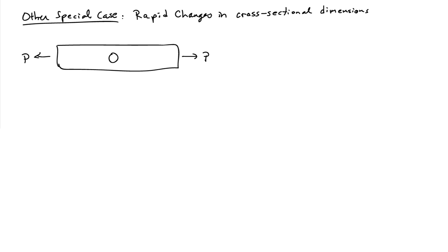There's some other special cases that one should worry about, and one that's important to remember about is rapid changes in cross-sectional dimensions. So if I have a bar with a hole drilled through the middle of it, I have to worry about the state of stress. So if I make a section cut between the hole and the end of the bar, the stress would be P over A, so uniformly.